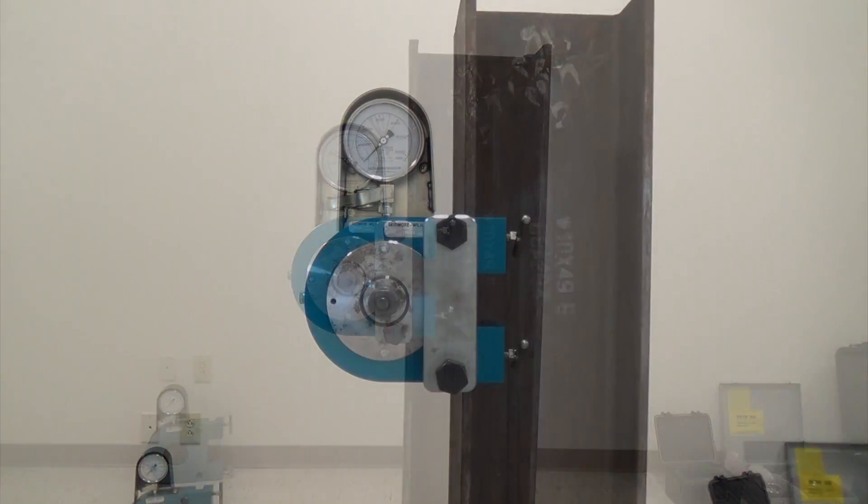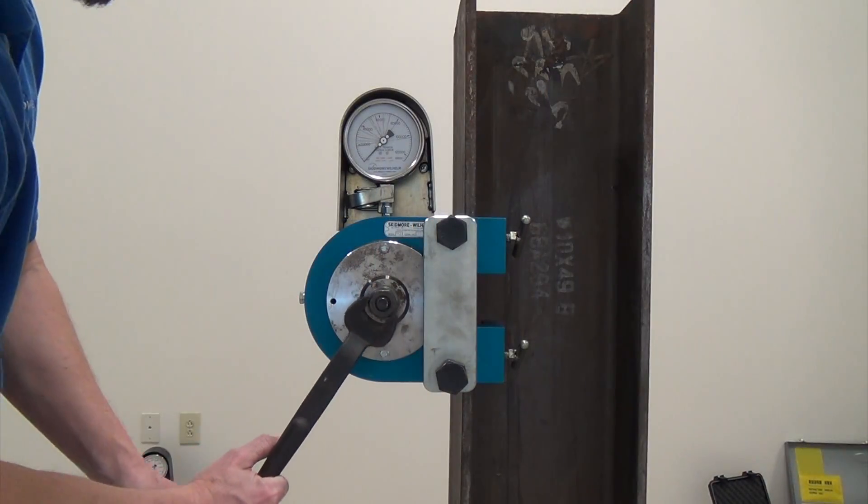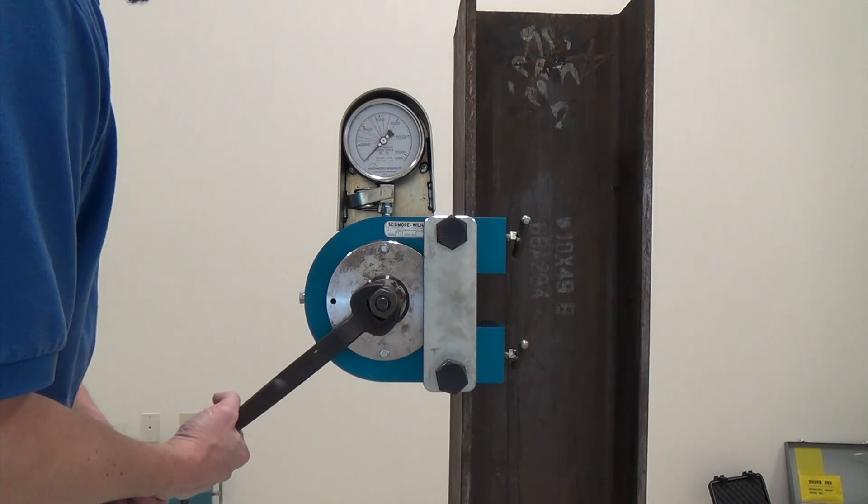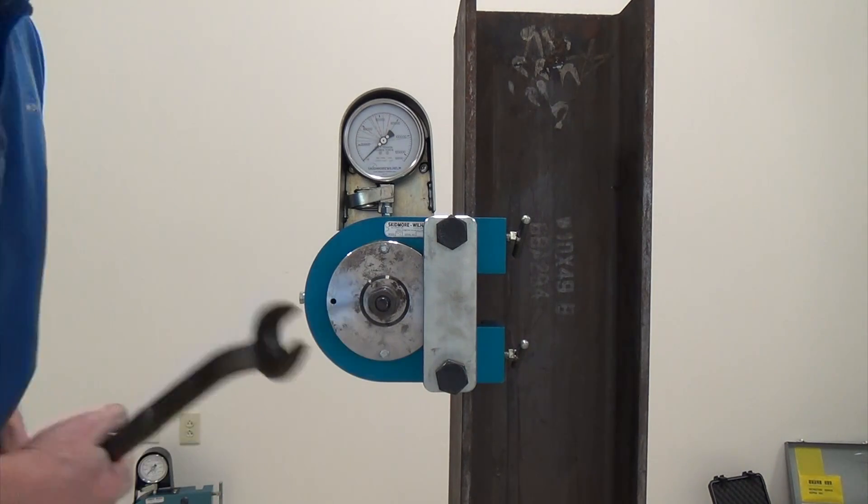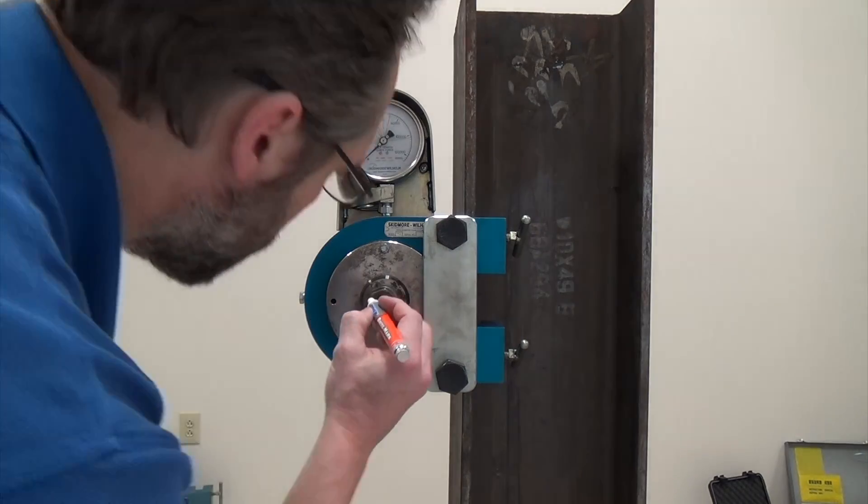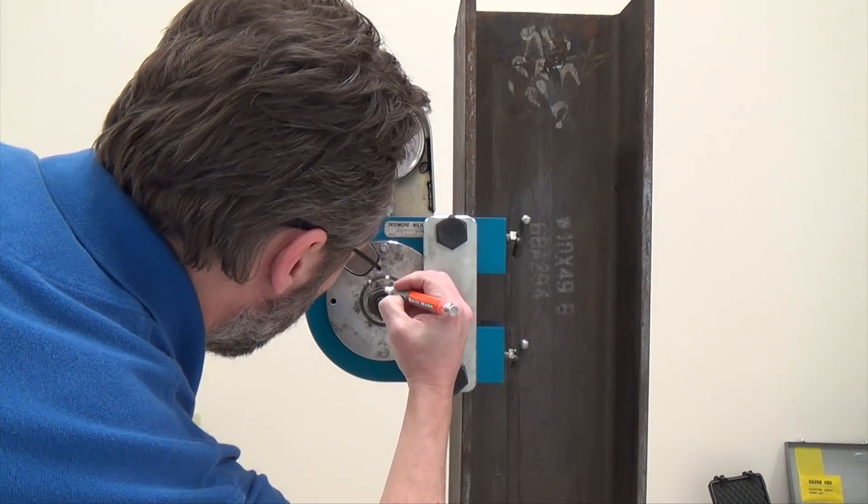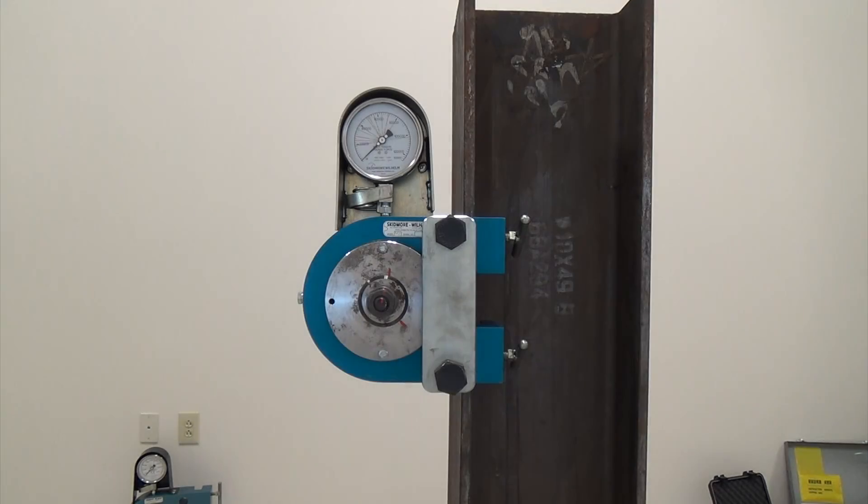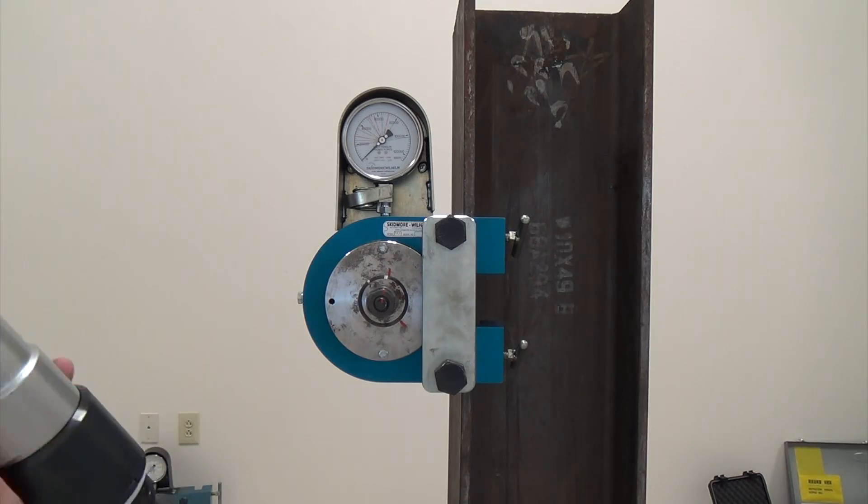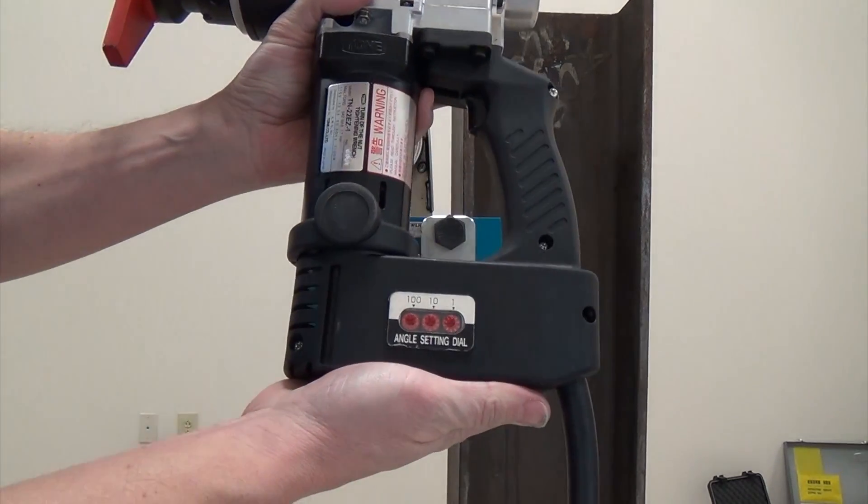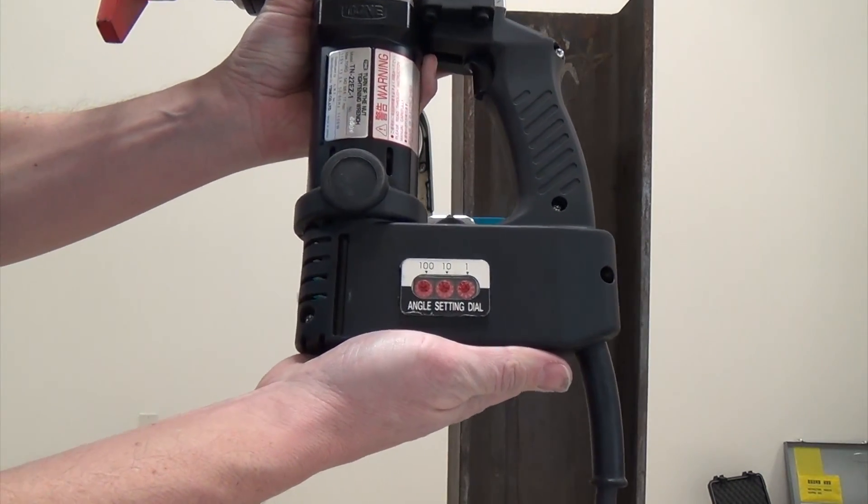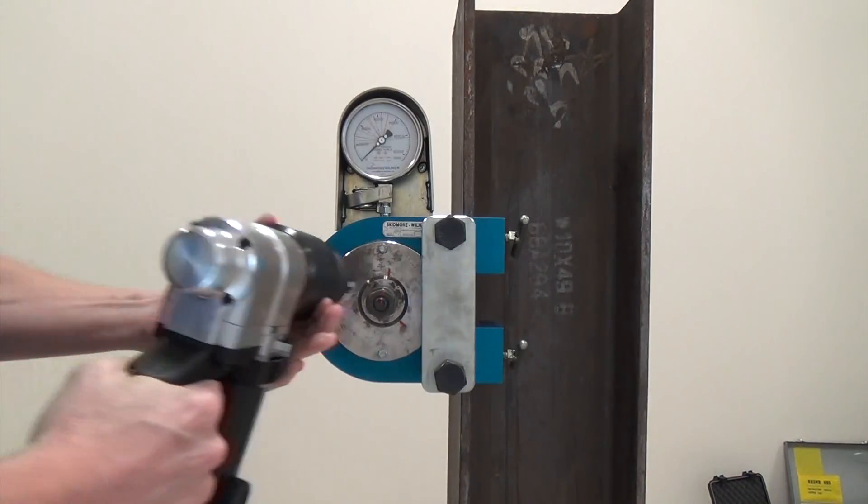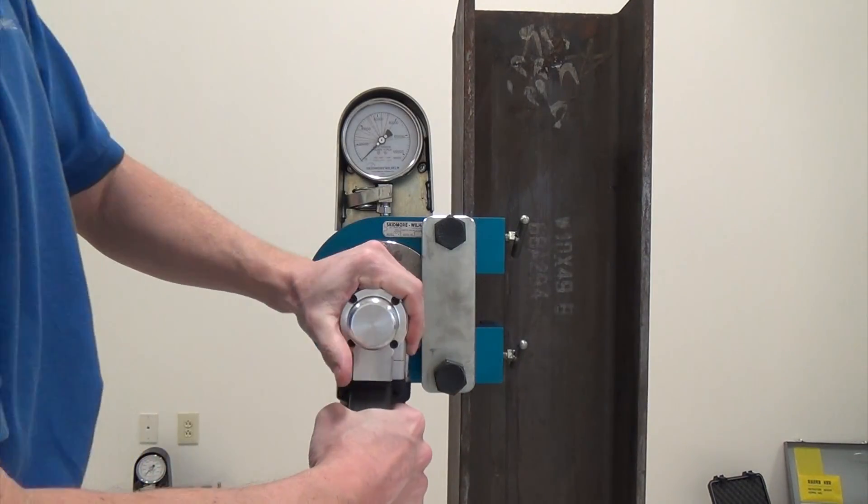Remember that a snug tight fastener is required for all turn of nut installations. Even if the turn is being executed automatically with a TN wrench, the bolt must be snugged properly before the required turn is applied. In this demonstration, we will be testing a three-quarter inch diameter bolt. And since it's less than three inches in length, it requires one-third of a turn to develop required tension.